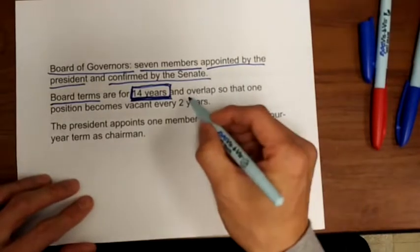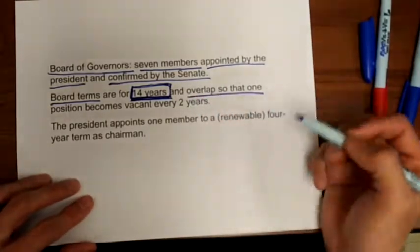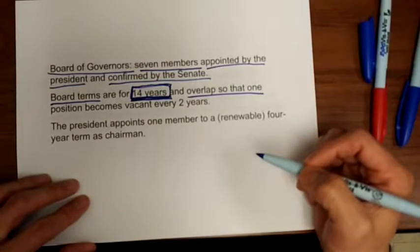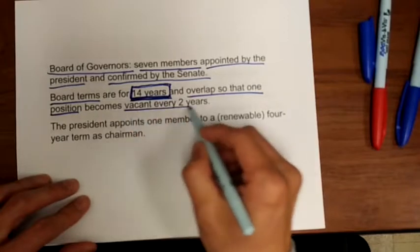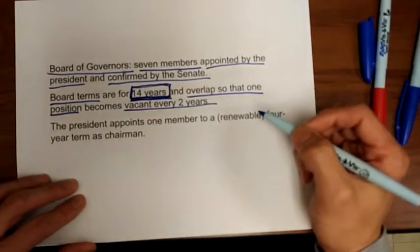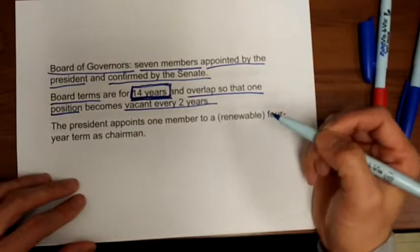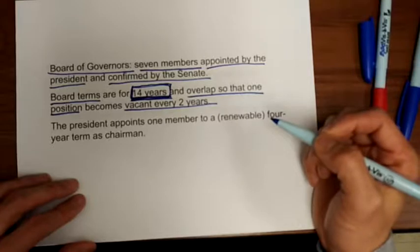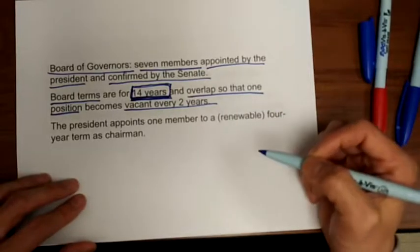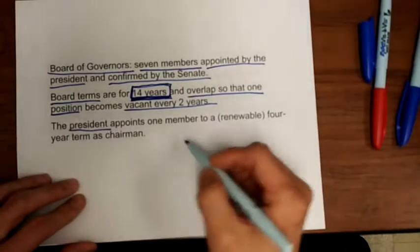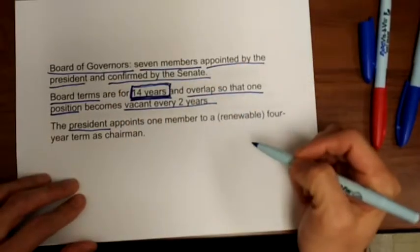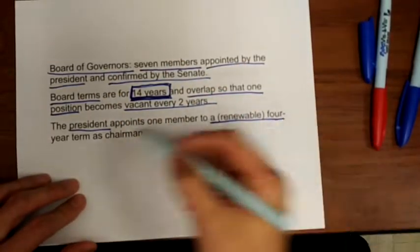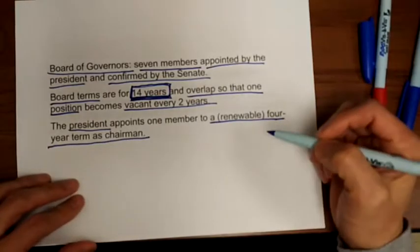The terms are overlapped so that one position becomes available every two years. And the President appoints one of the seven members to a renewable four-year term as chairman.